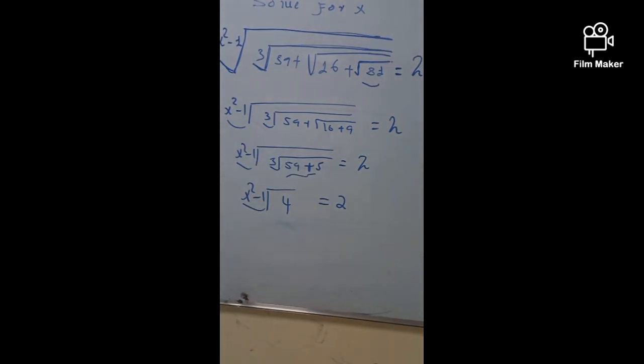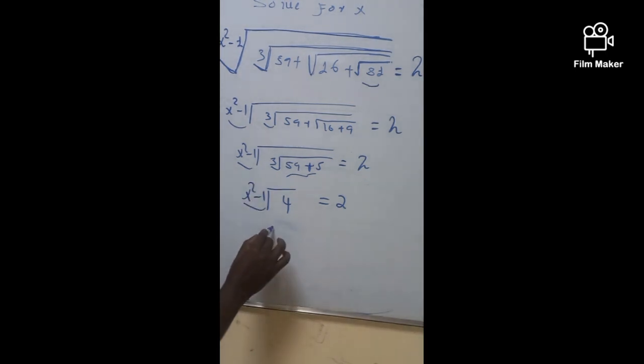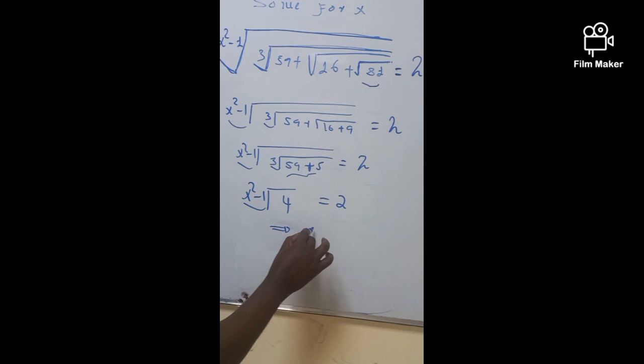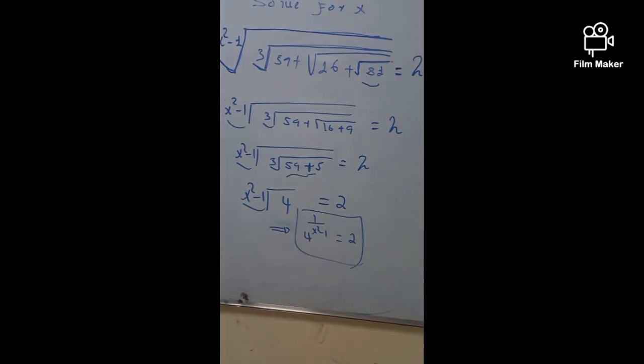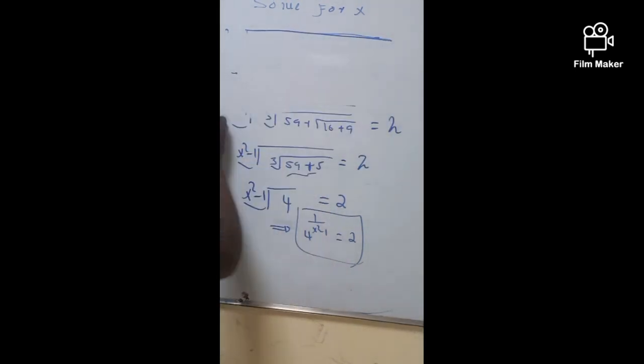Finally, we have the equation this one. And this implies that 4 raised 1 over x square minus 1 is going to be 2. So this is what we need. Then finally, I am going to explain how this problem will be done in general.